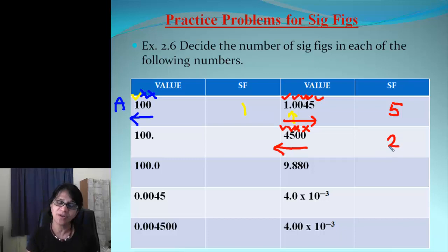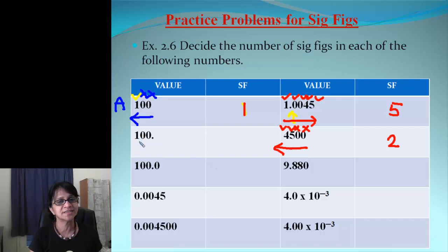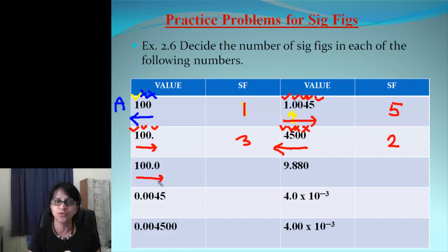You might think 100, 100., and 100.0 are the same number with the same sig figs — but that is not correct. 100 has one sig fig. 100. has a decimal point present, so we go left to right and count from the first non-zero number, getting 3 sig figs. 100.0 also has decimal point present, so we go left to right and count all four digits — that's 4 sig figs.